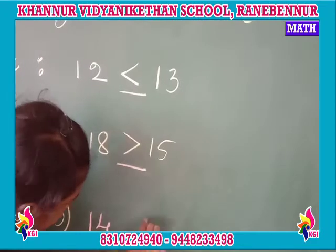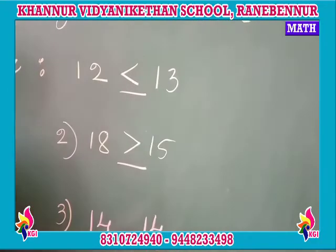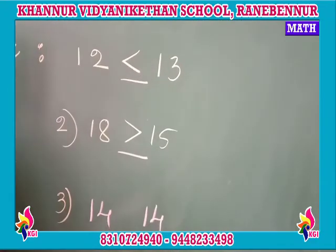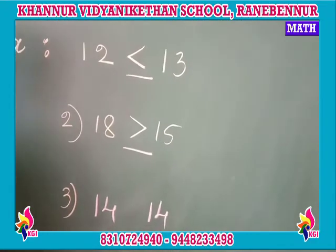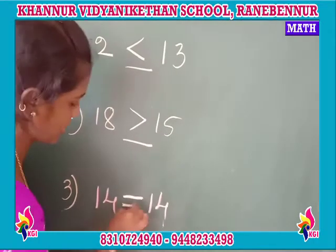Third one: 40 and 40. These two numbers are the same. So we shall draw the equals sign.